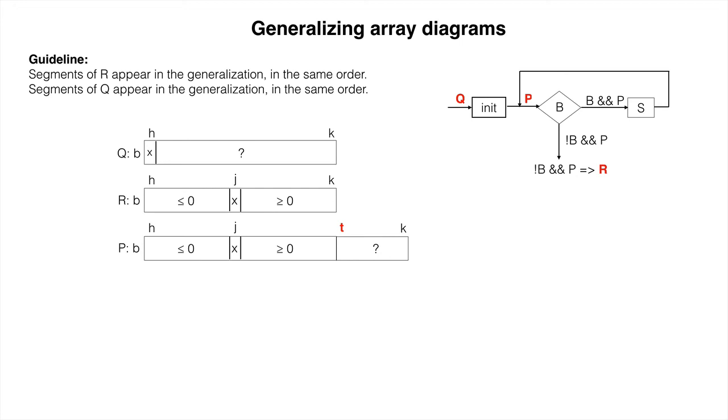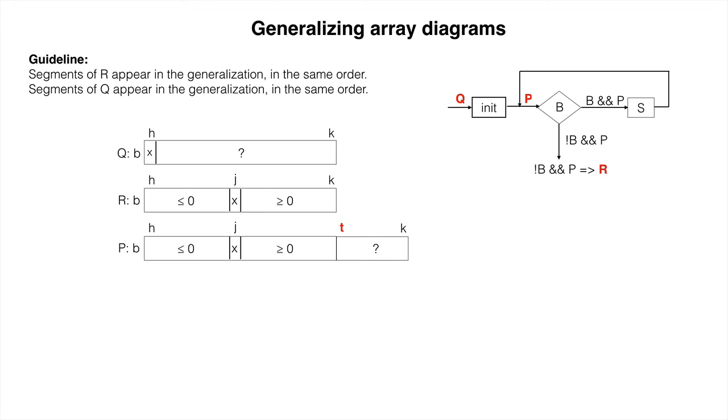Note that in all three of these diagrams, h and k give the beginning and end of the array. Variable j is used in the invariant as it is used in the postcondition.